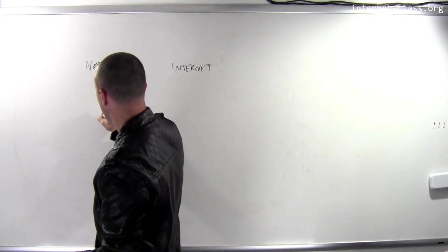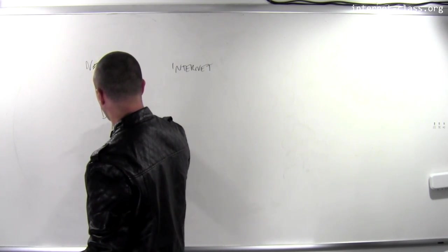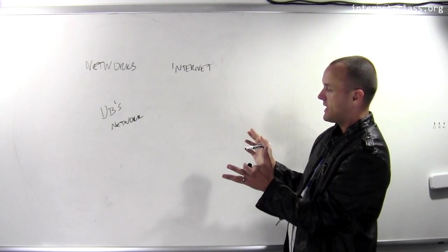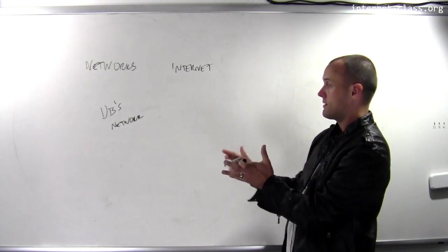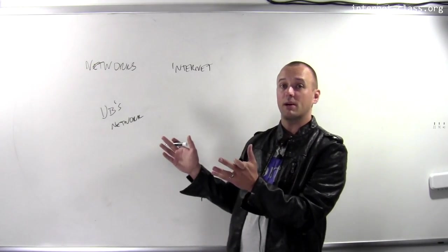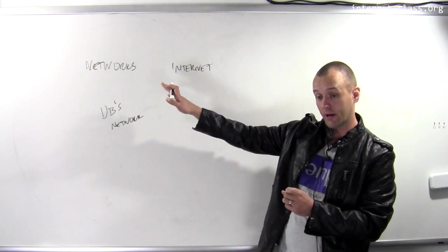Here's UB's campus network. Downtown, there are other campus networks for the other universities in the area. Canisius probably has its own campus network. These are examples of different computer networks.